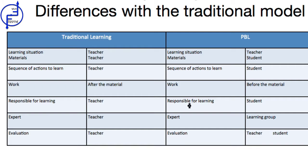In the traditional model, the teacher has the responsibility of the teaching and learning process, while in problem-based learning, the student has an active role. In the traditional model, the teacher is the expert, while in problem-based learning, the teacher is the guide. Regarding evaluation, in the traditional model the teacher evaluates the students, whereas in the problem-based learning model, the student plays a leading role in the process through self-evaluation.